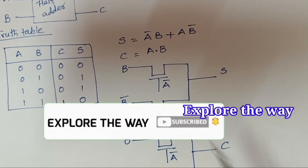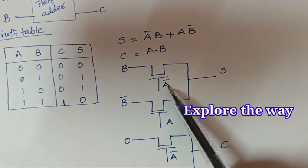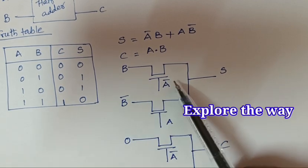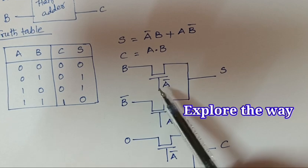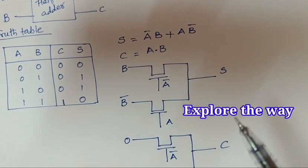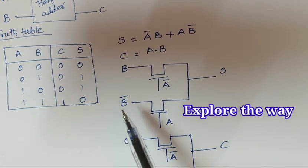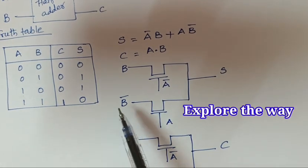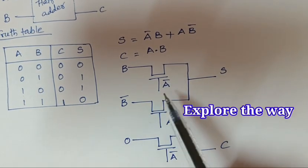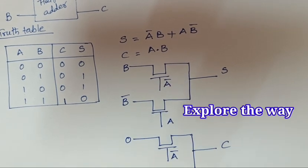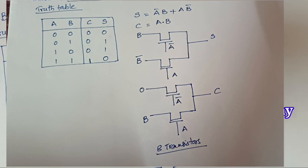Along with that, we are using the complement of A and the complement of B, which are not readily available. To generate A̅, we need one inverter, and for B̅, another inverter. So totally, two inverters require four transistors, plus these four pass transistors. Totally, eight transistors are required to implement the half adder.